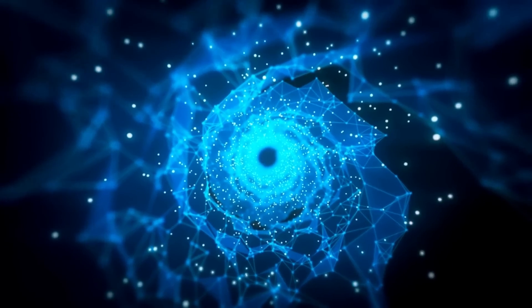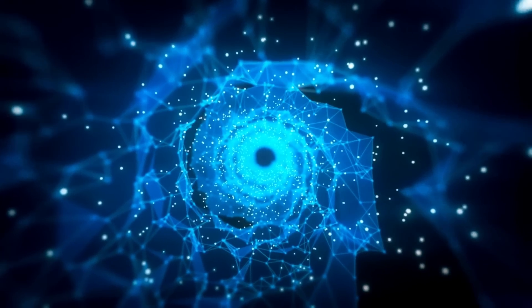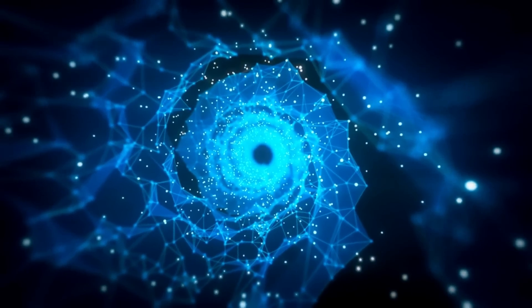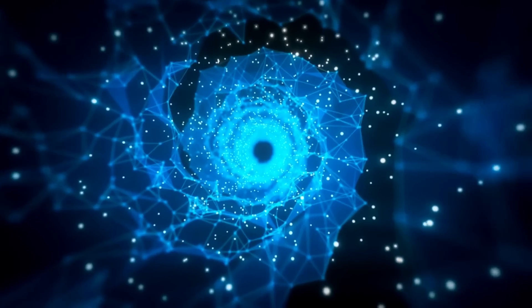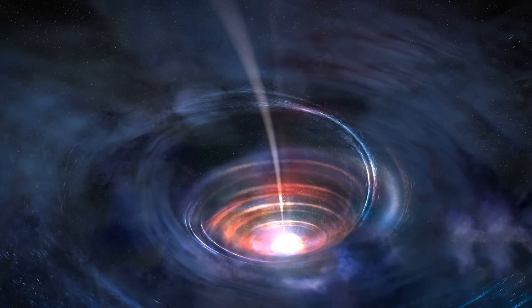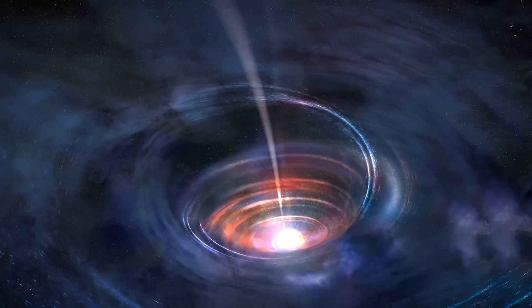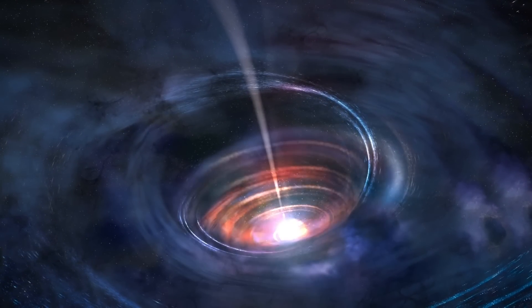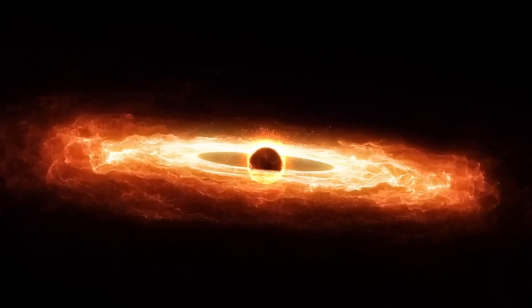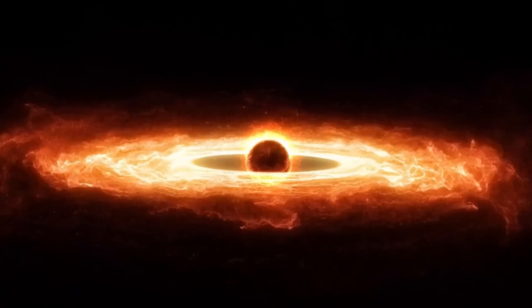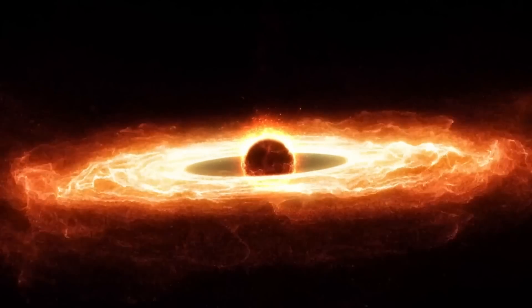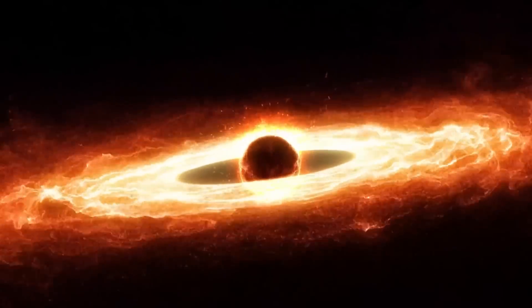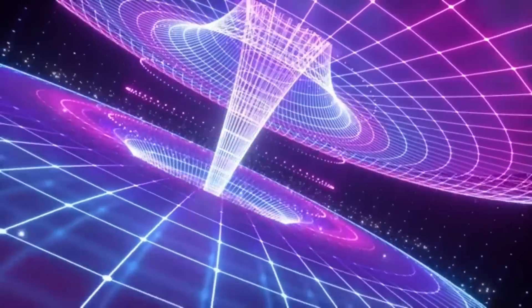Detecting black holes is no easy task since they don't emit any light. However, scientists have found ways to infer their presence by observing their effects on nearby matter. For example, if a black hole passes through a cloud of interstellar matter, it'll pull that matter towards it in a process called accretion. Additionally, when a normal star gets too close to a black hole, it can get torn apart, emitting x-rays as it does so.